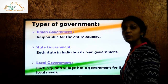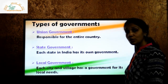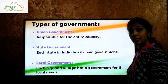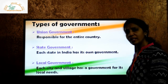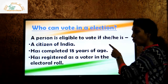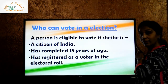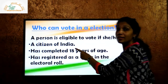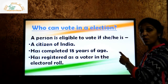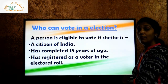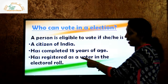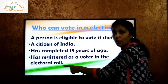The citizens of India choose their governments. But that does not mean that you can vote, since you all are very young. A person is eligible to vote if he or she is a citizen of India, has completed 18 years of age, and needs to be registered as a voter in the electoral roll.